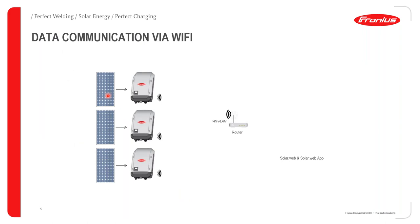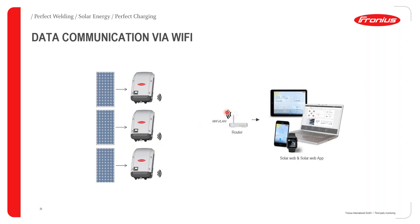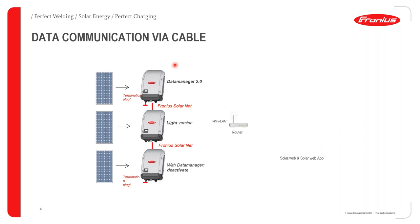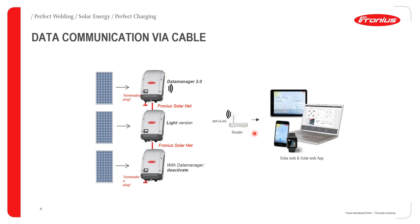For data communication via Wi-Fi: all the inverters communicate independently to the router via Wi-Fi. Through this, you can view inverter data on your monitoring device — be it a laptop, tablet, or smartphone. You can also set up a SolarNet ring and connect to the router via cable or Wi-Fi, and then monitor all devices via your monitoring device.